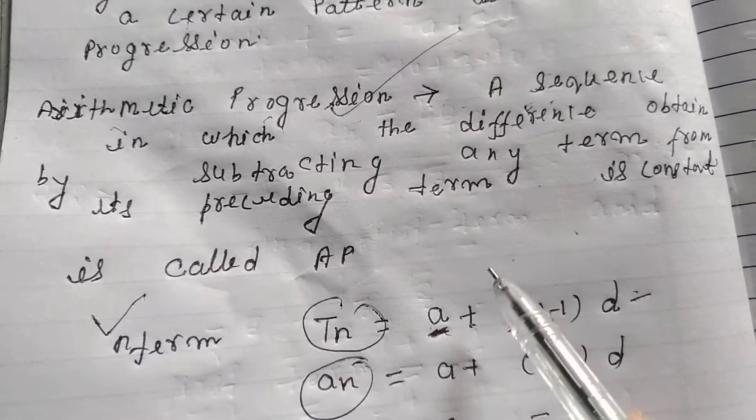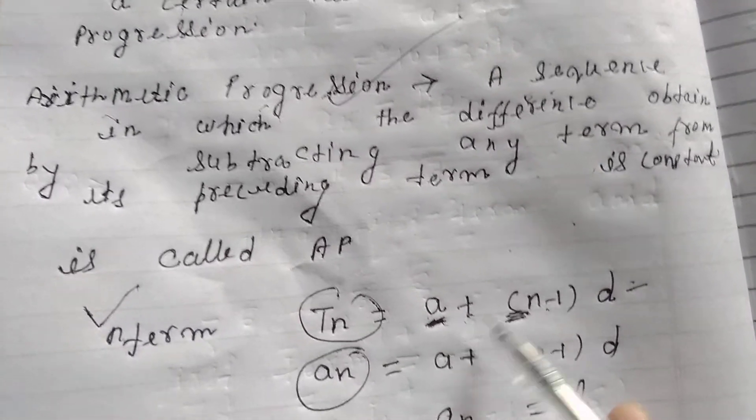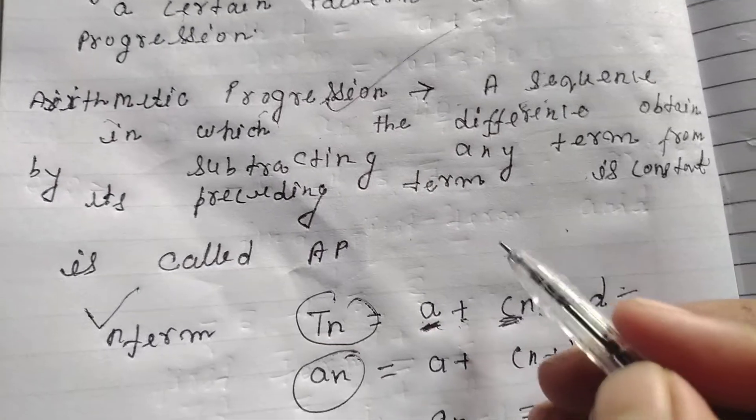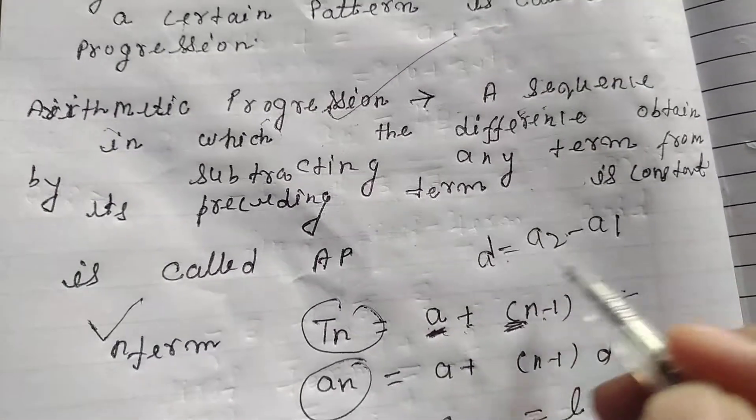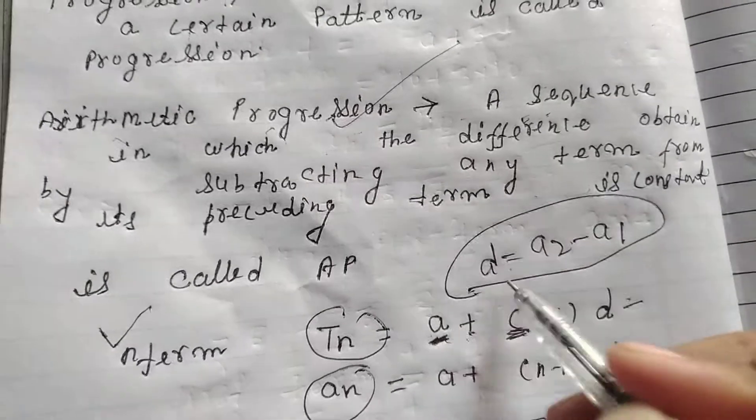The common difference is second term minus first term. Then the common difference between second term and first term gives us d, the common difference.